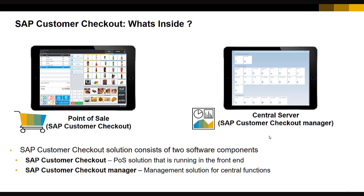SAP Customer Checkout has two software components. The first is called SAP Customer Checkout — it is the point-of-sale solution installed on the POS terminal where business transactions take place. It is also the component where all hardware devices are integrated, including printers, cash drawers, line display, customer display, barcode scanner, and credit card terminal.